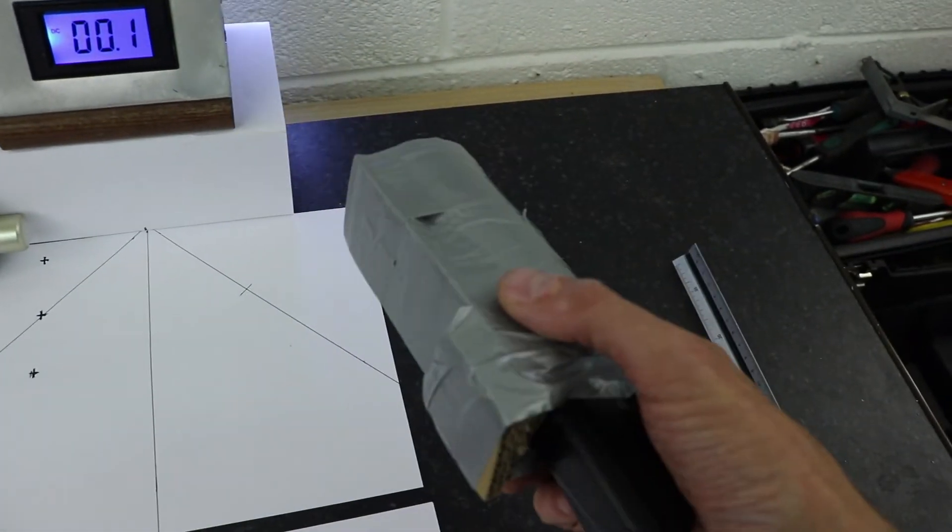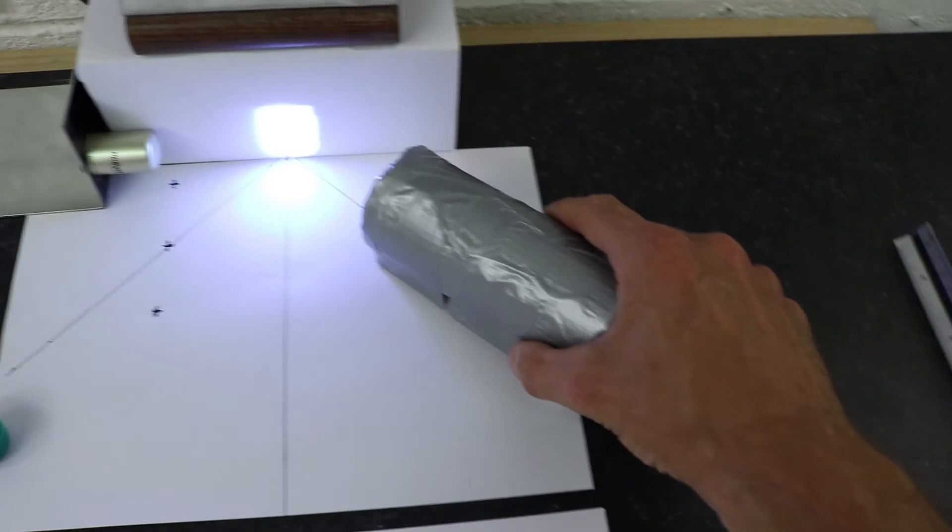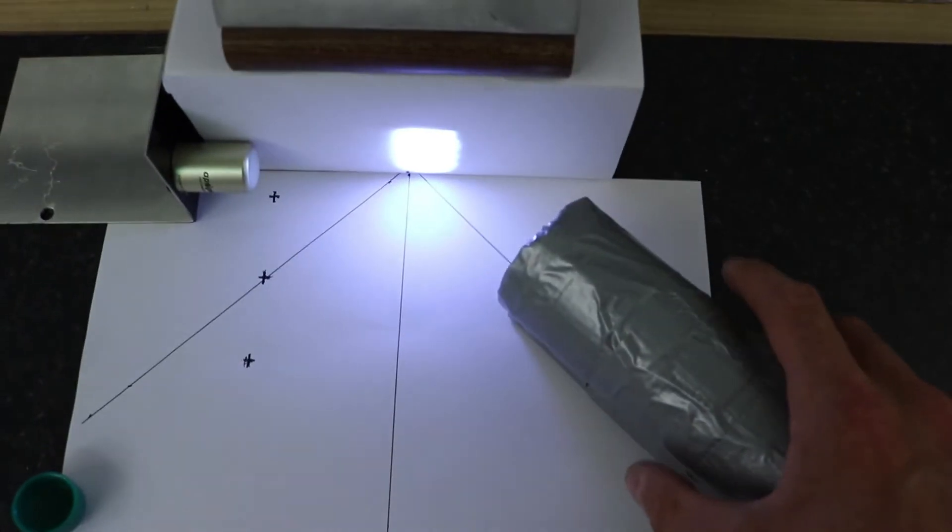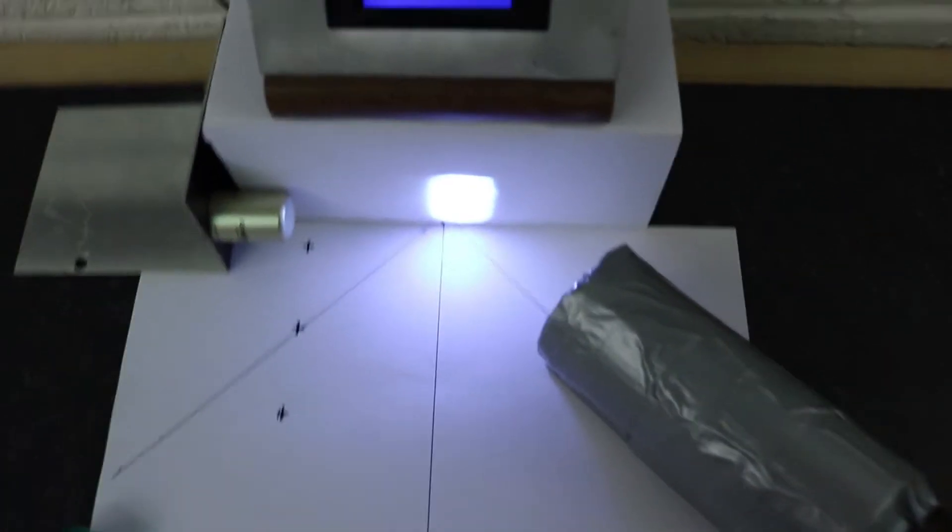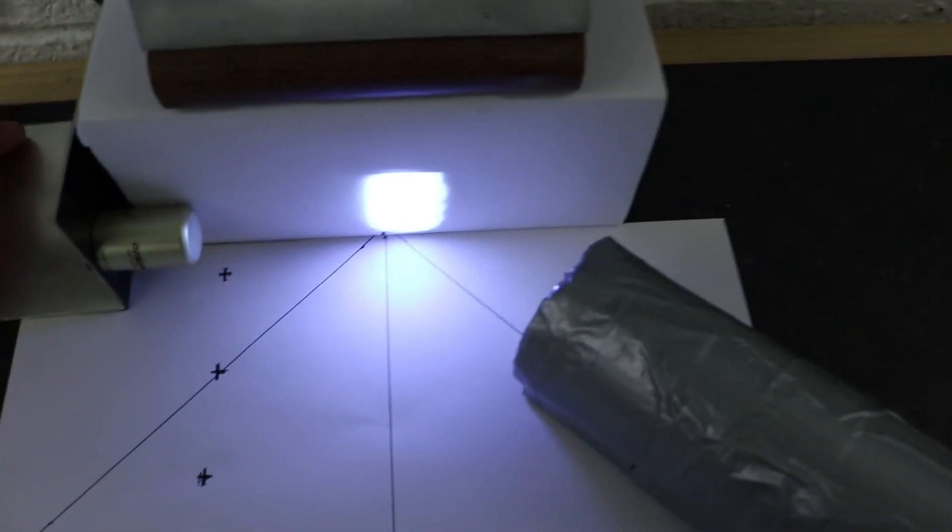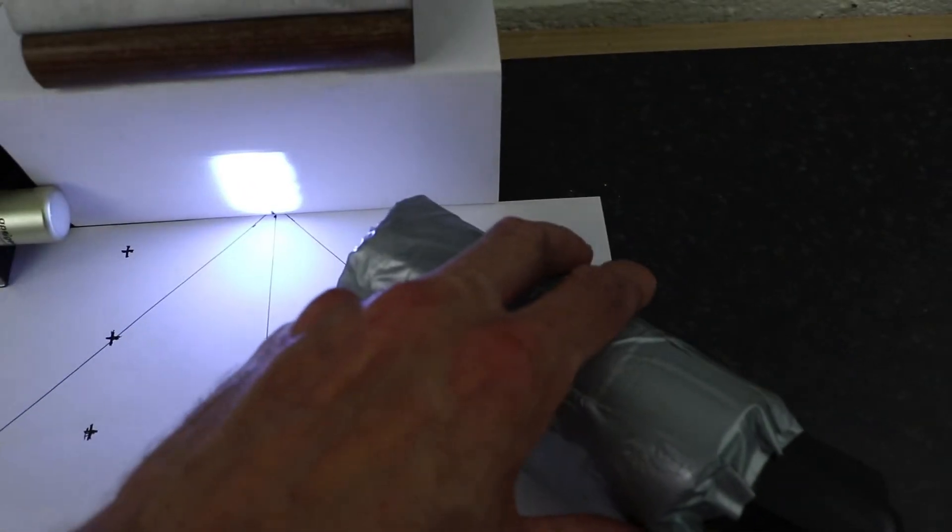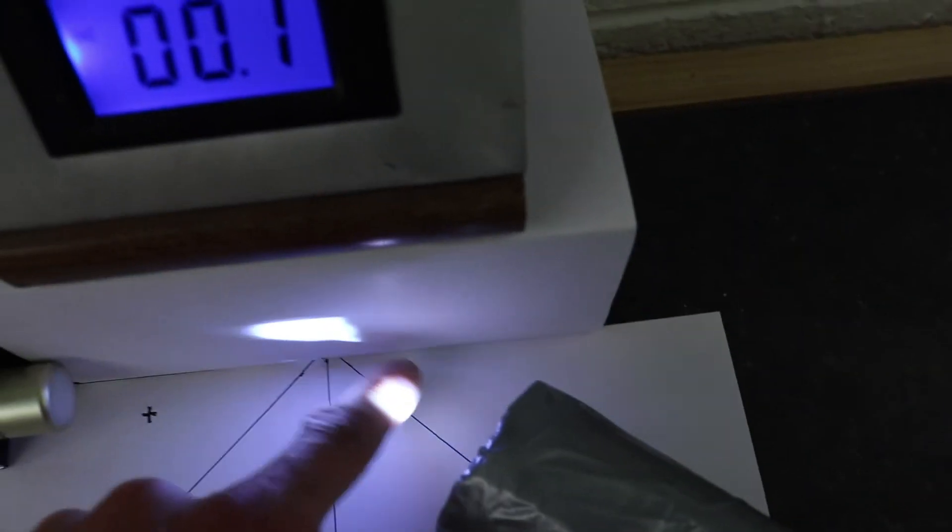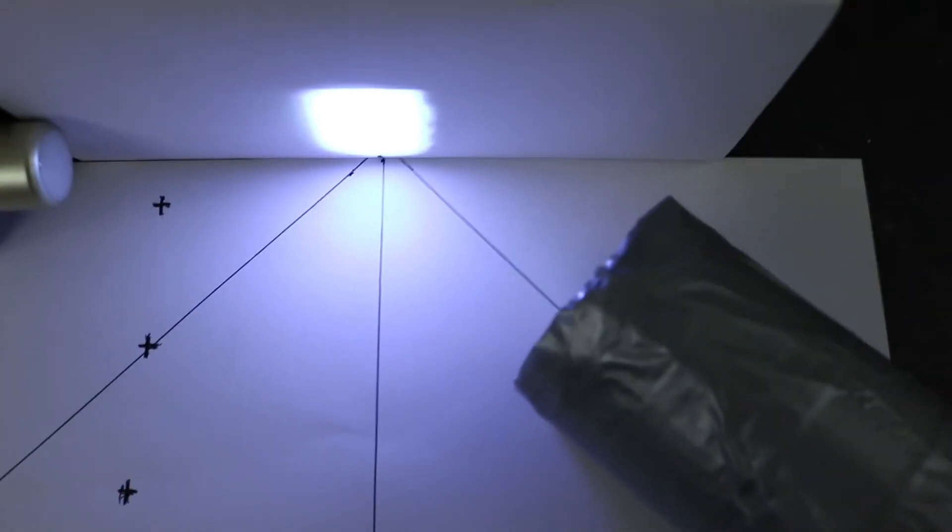So here we have the setup. We have a small lamp with a slit aligned here, and you can see straight away against the matte white surface, which in this case is just simply matte white paper. You can see that the light is reflecting in every direction off that surface.